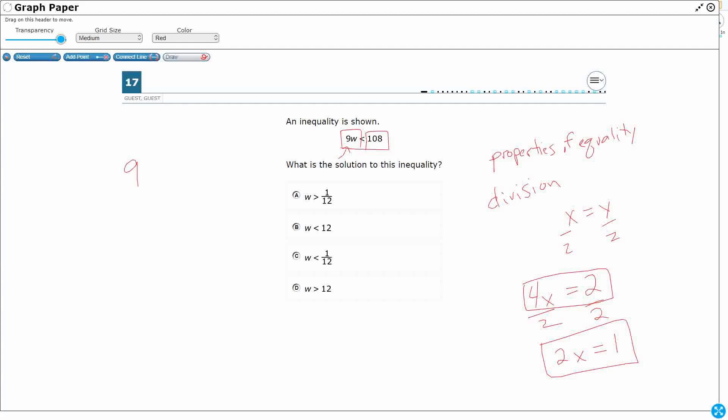And what do I have here? I have a 9, I'm going to go and put a multiplication sign there. A 9 times a W is less than 108. I want to get that W all by itself. So I need to think, what is the inverse operation? What is the opposite of multiplication? Hopefully we think that multiplication and division are tied together. That's because they're inverse operations.